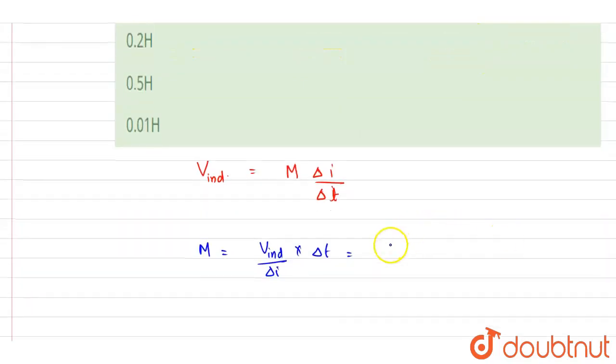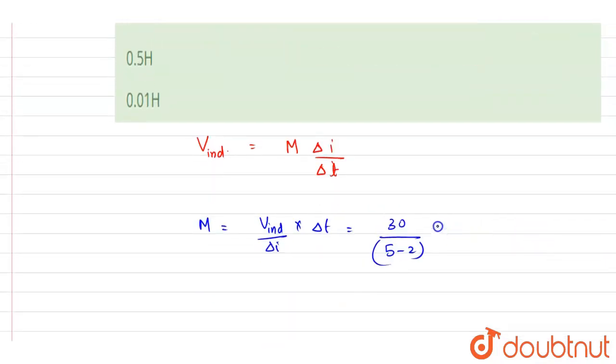Change in current will be 5 minus 2, and change in time it is 0.01.